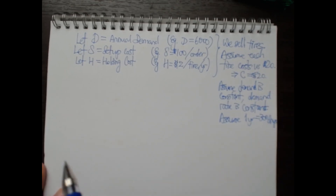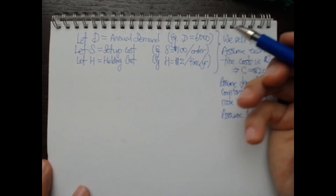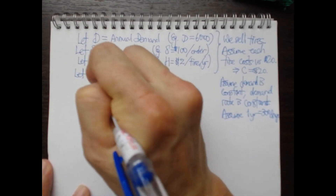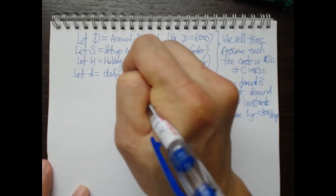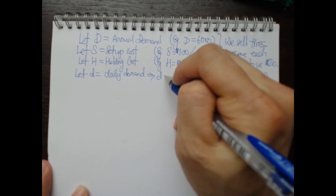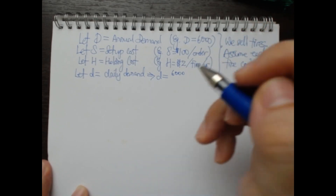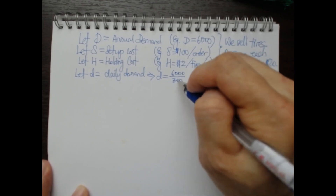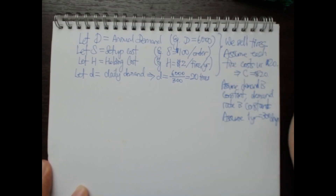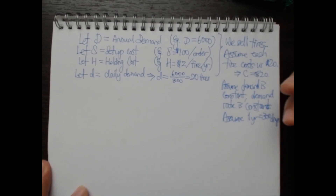Annually there will be 6,000 tires sold. Since demand is constant, let D be the daily demand. We need to tally the annual demand with the number of days in a year. So the daily demand works out to 20 tires per day — a fixed number. Every day we will sell exactly 20 tires, no more and no less.